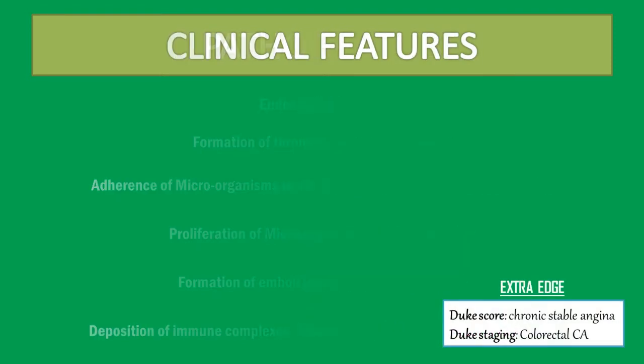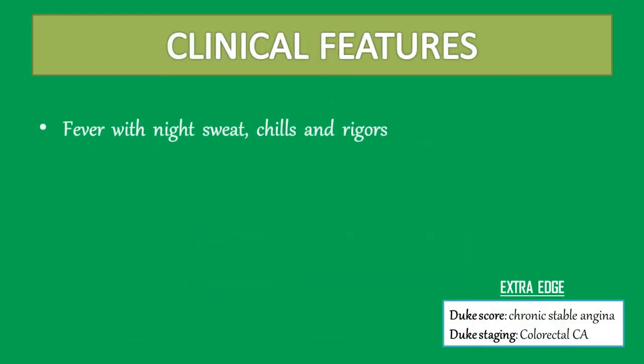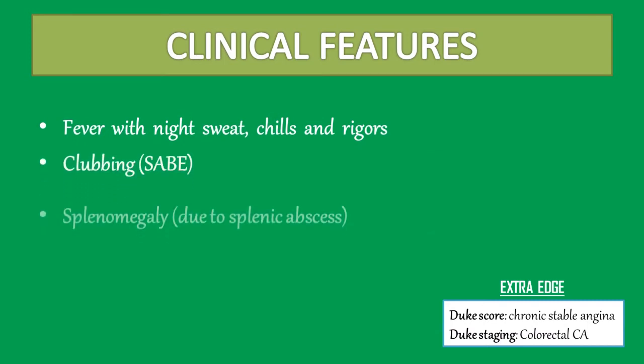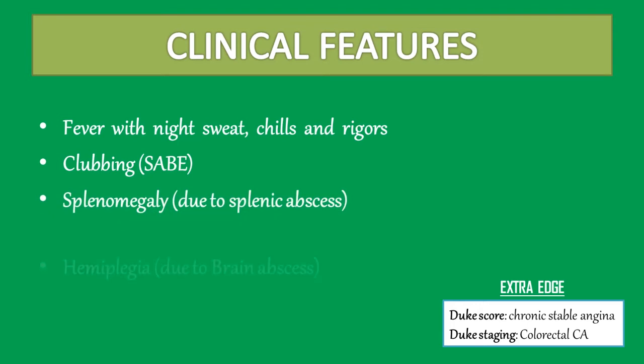Moving on to clinical features. Patients commonly present with fever with night sweats, chills and rigors. Clubbing is common in sub-acute bacterial endocarditis. Splenomegaly due to splenic abscess. Hemiplegia due to brain abscess.